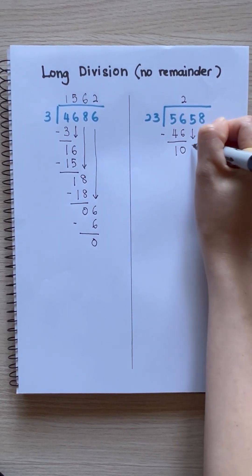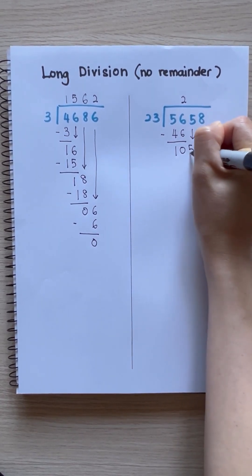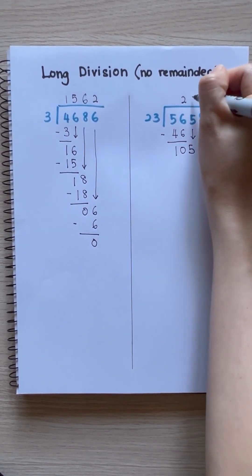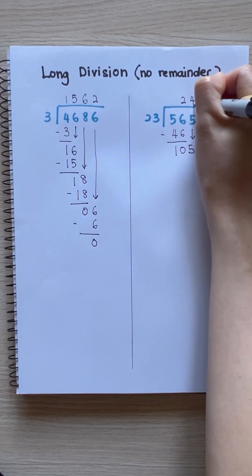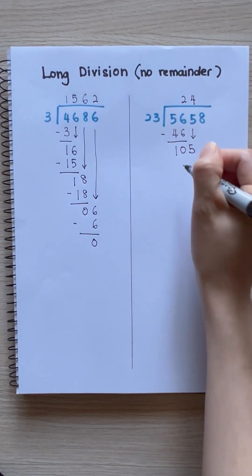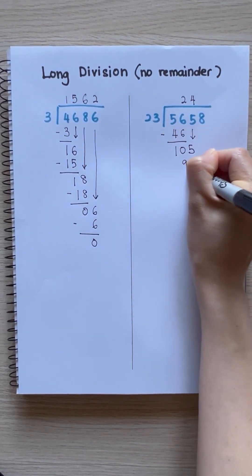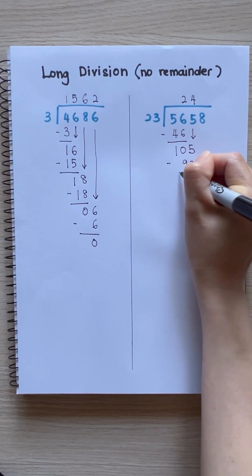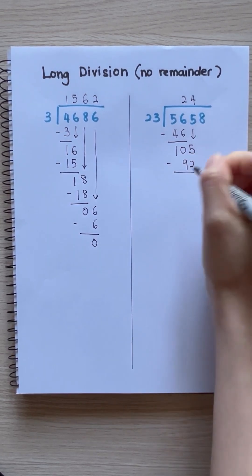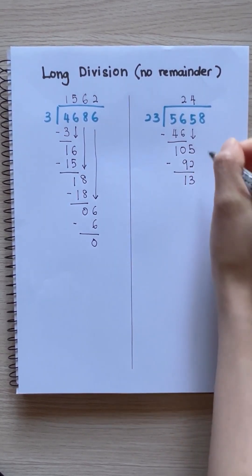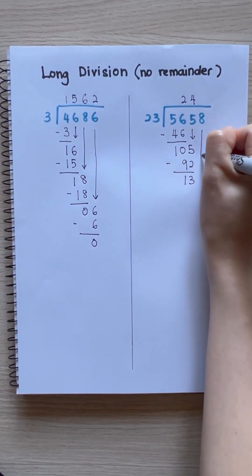Bring down 5, makes 105. 4 times 23 equals 92. 105 minus 92 equals 13. Bring down 8.